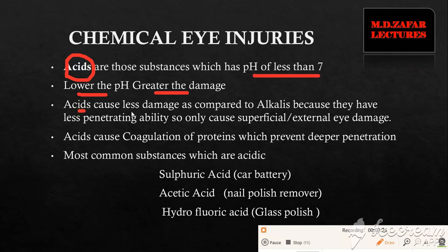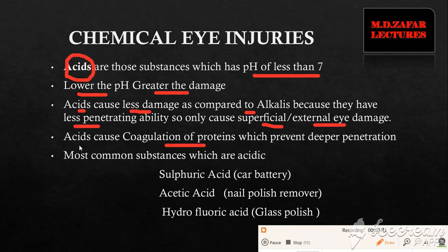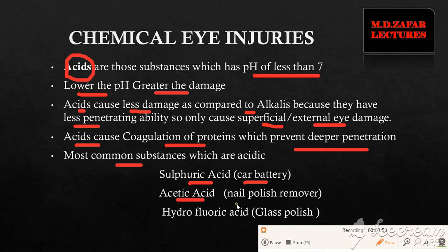Acids are less damaging compared to alkalis because they have much less penetrating ability, which leads to only superficial and external eye damage. This is because of the coagulation of proteins which acids cause, which prevents further deeper penetration. The most common acid substances include sulfuric acid found in car batteries, acetic acid found in nail polish remover, and hydrofluoric acid — the most potent acid — found in glass polish.